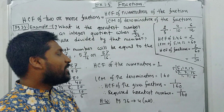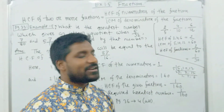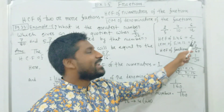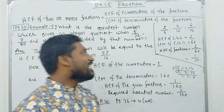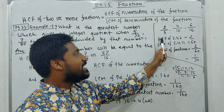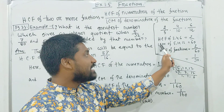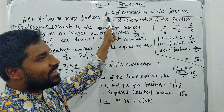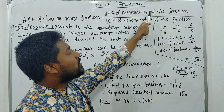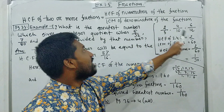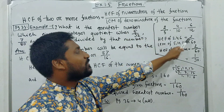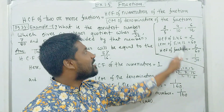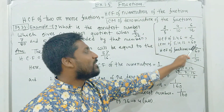We multiply — using the formula we have mentioned — the HCF of the numerators is 2, and the LCM of the denominators is 60. Finally, the HCF of the fractions is 2 over 60.